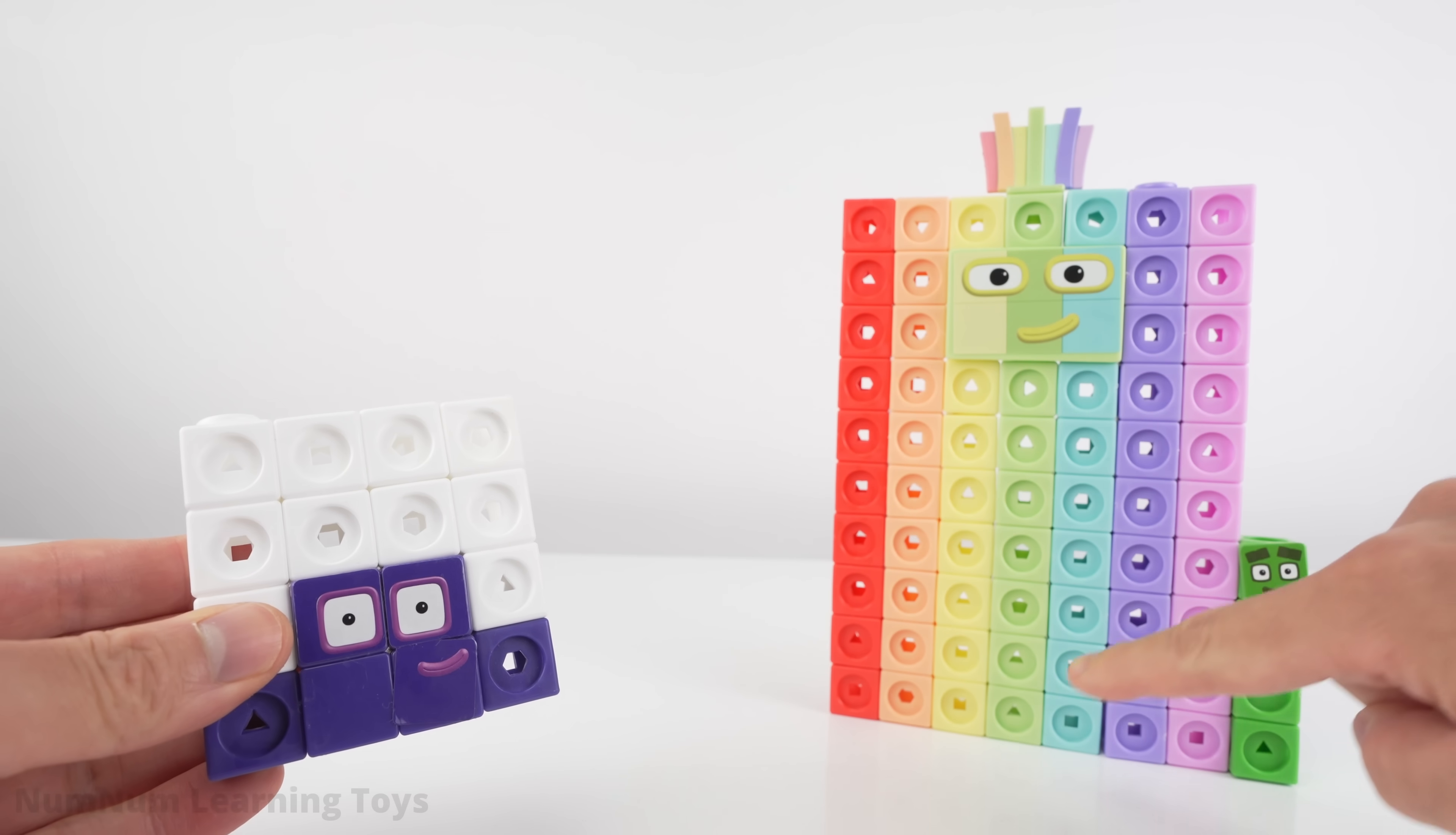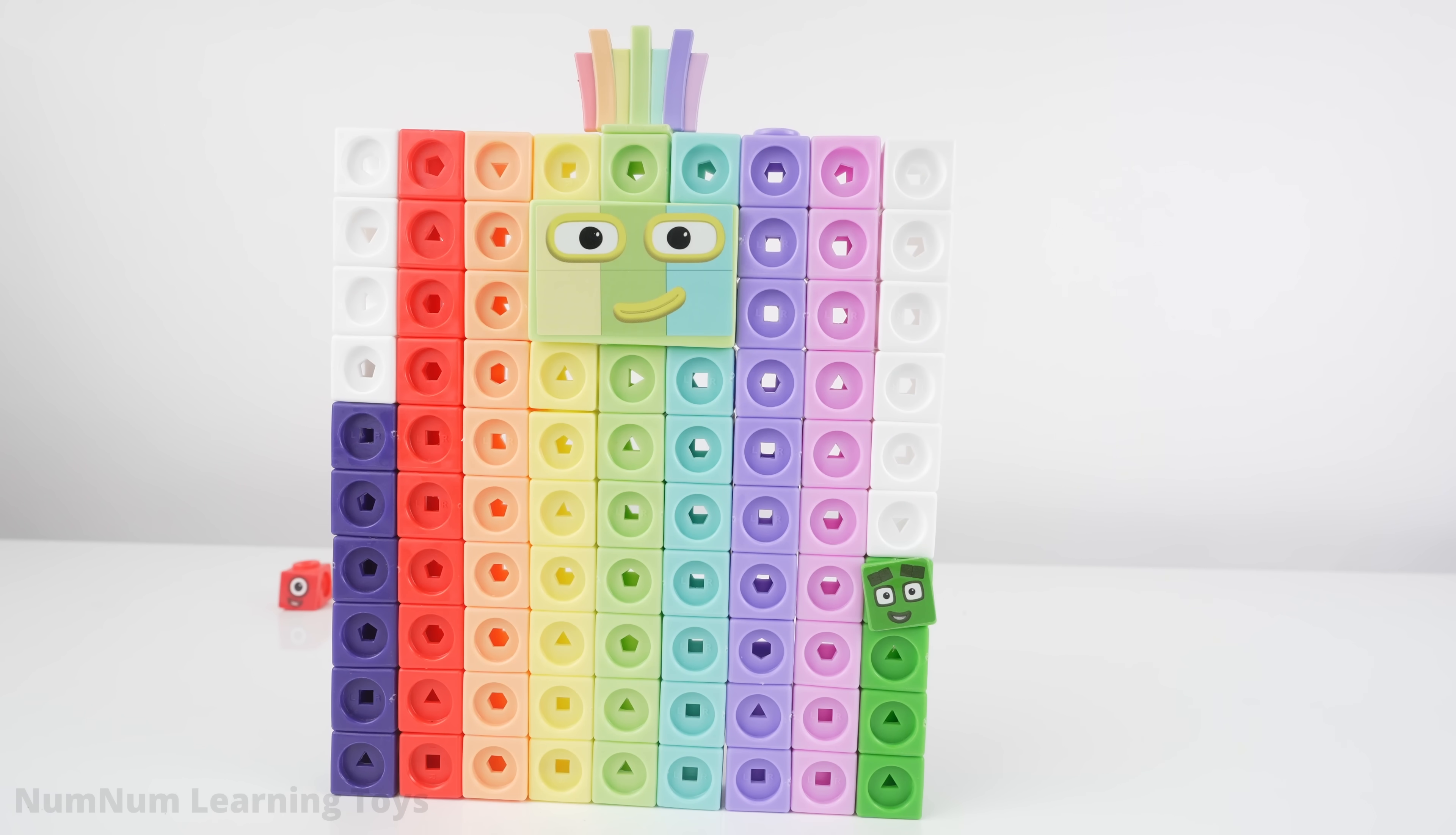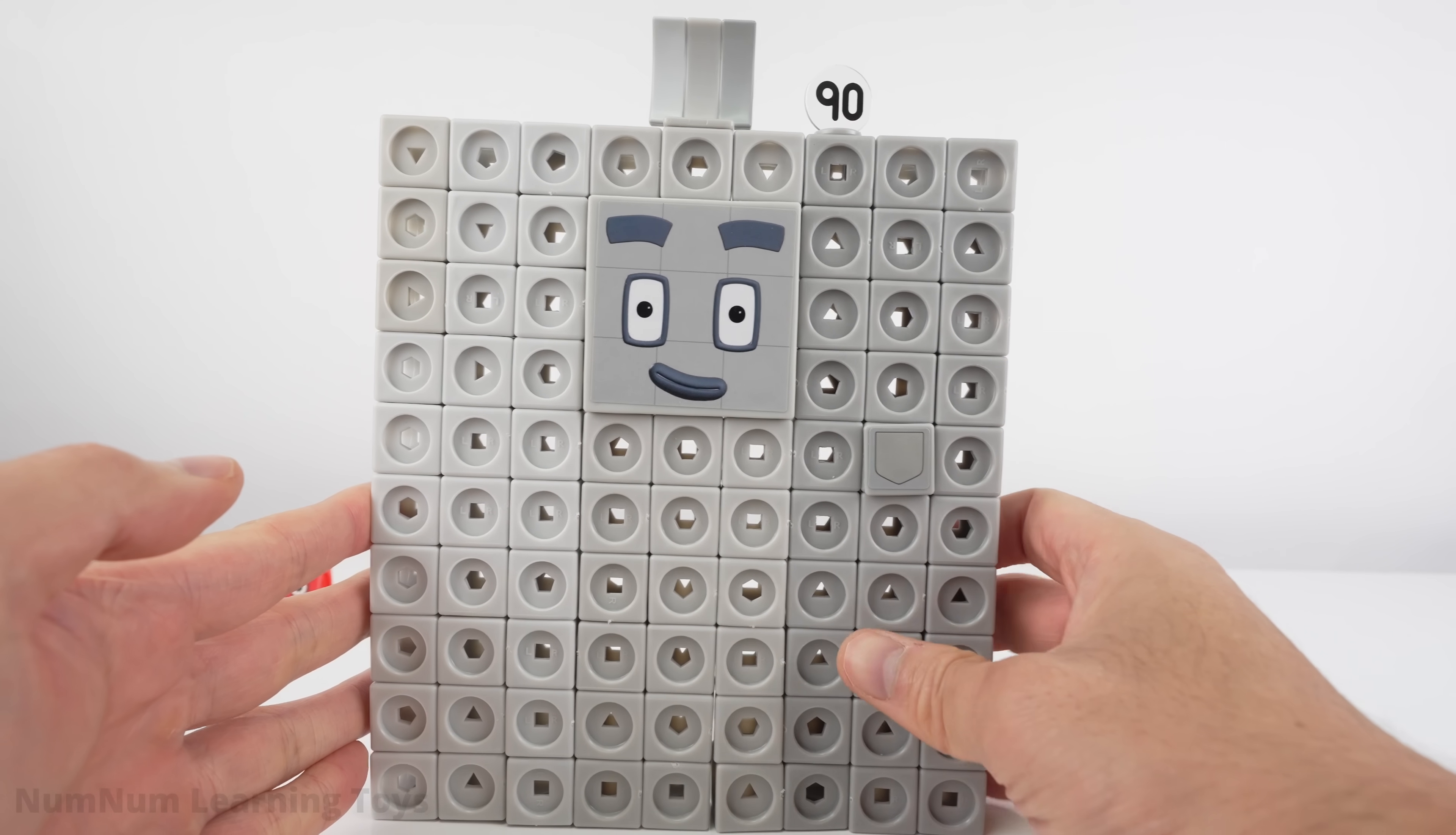If we add sixteen blocks to seventy-four, what number will we get? It's going to be a big number. We made a new rectangle that is nine units wide and ten units tall. Ninety! It's our big rectangle friend, ninety.